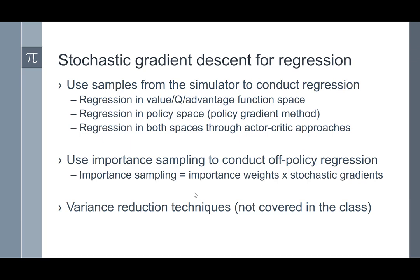We have seen many different algorithms. More recently, the TD-lambda algorithm with importance sampling was an instantiation of off-policy regression. We did not cover variance-reduced policy gradient methods, but many new algorithms with variance reduction properties have been designed — meaning that as you run more simulation, the variance in training error goes down. There is some recent work since 2017 on this topic.